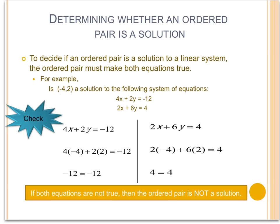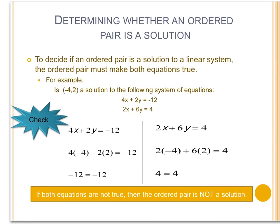For example, the first question asks: is negative 4, 2 a solution to the following system of equations? 4x plus 2y equals negative 12, and 2x plus 6y equals 4.